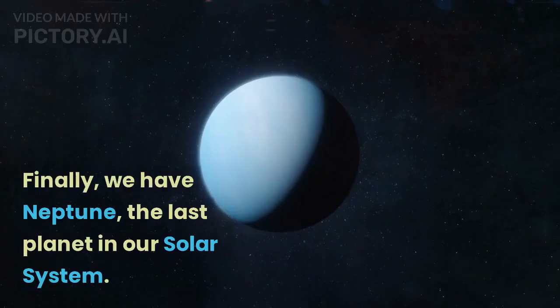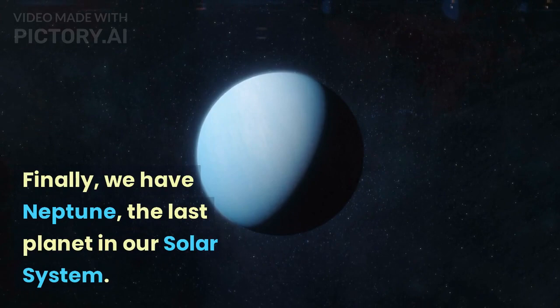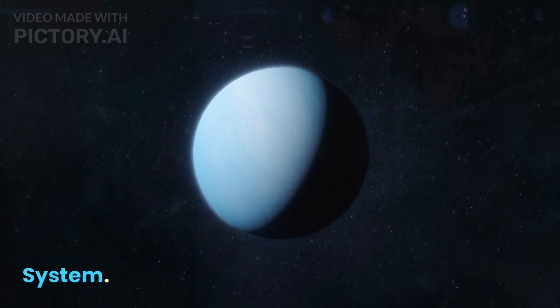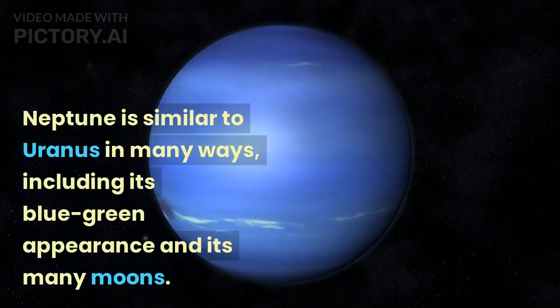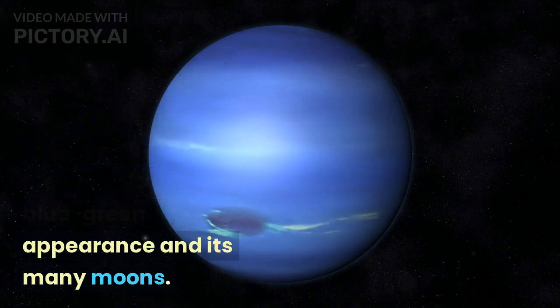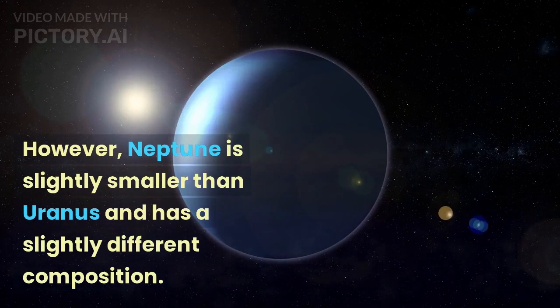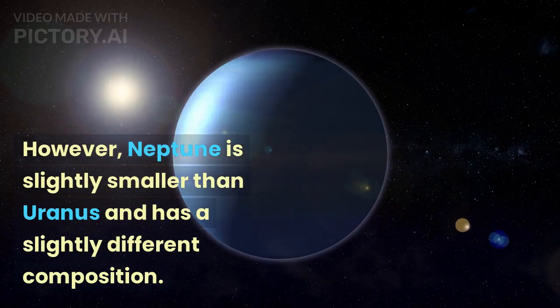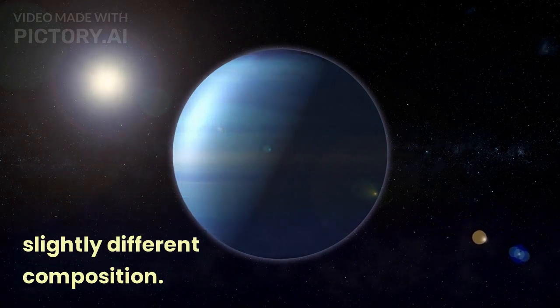Neptune. Finally, we have Neptune, the last planet in our solar system. Neptune is similar to Uranus in many ways, including its blue-green appearance and its many moons. However, Neptune is slightly smaller than Uranus and has a slightly different composition.